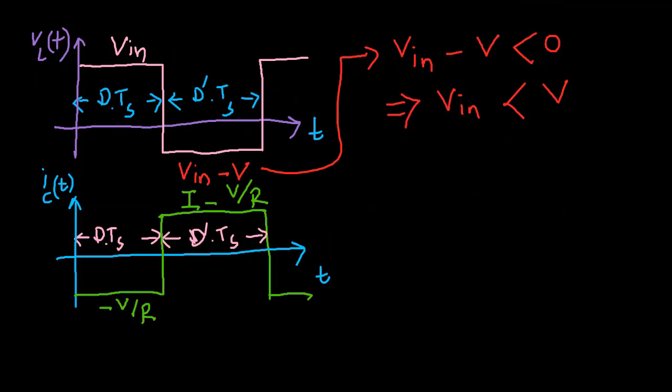From the waveform of the inductor voltage, it can be deduced that the DC output voltage V is higher than the input voltage V in.